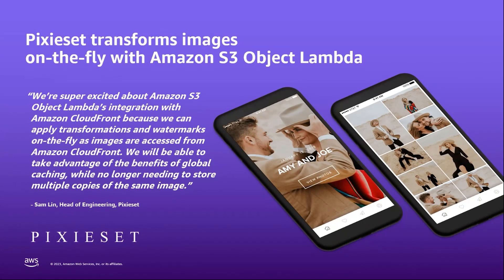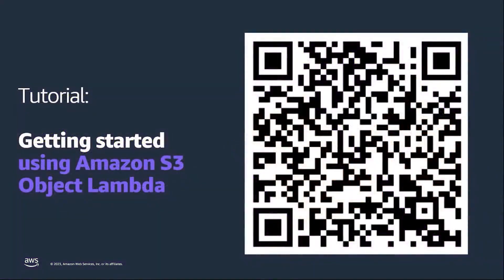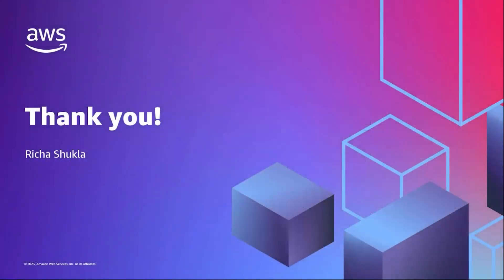They also said that they will be able to take advantage of the benefits of global caching while no longer needing to store multiple copies of the same image. For getting started with S3 Object Lambda, I would encourage you to scan this QR code that will take you directly to the tutorial that helps you get started with Amazon S3 Object Lambda. Thank you very much for your time. I hope you learned a lot about the benefits that S3 Object Lambda provides, and I'm super excited to see how you start using the feature.